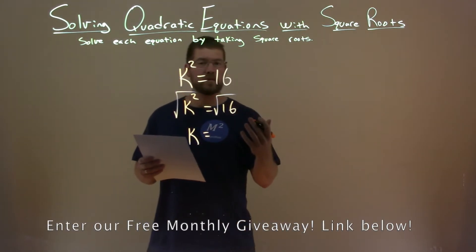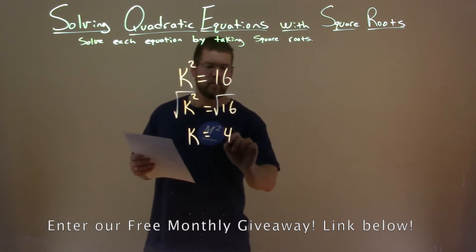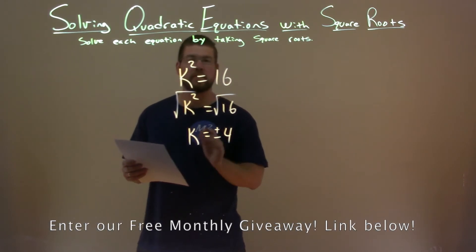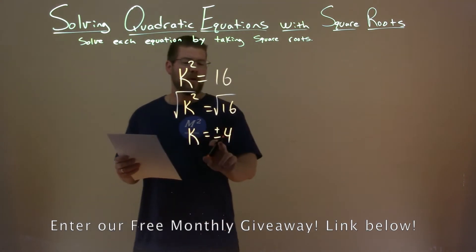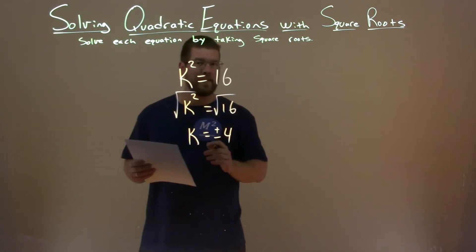What's the square root of 16? That's 4, right? But we're not just done. We have to write plus or minus 4. So positive or negative 4, both would have fit for k there.